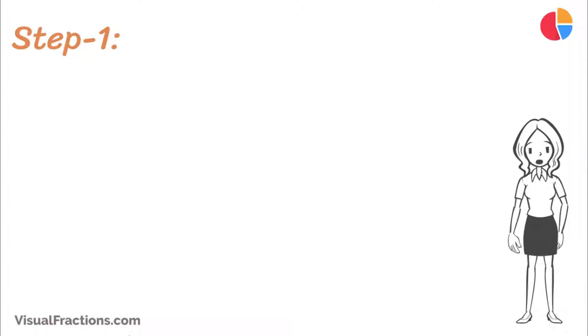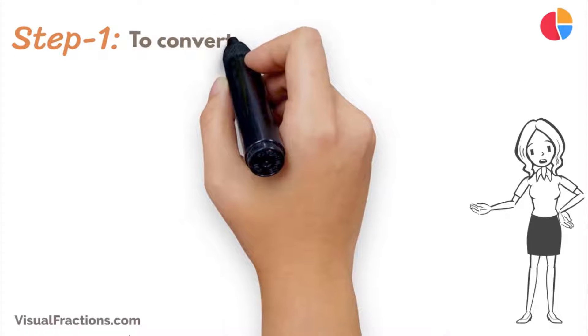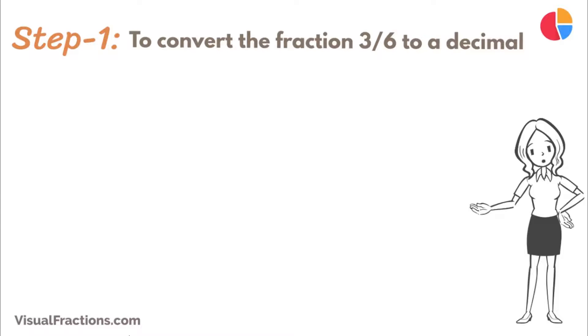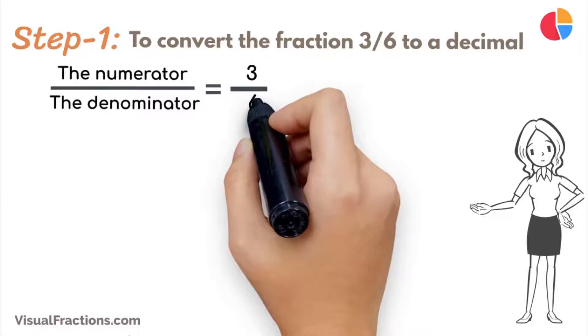The first step in converting the fraction 3 sixths to a percent is to convert this fraction to a decimal. We do this by dividing the numerator, the top number, which is 3, by the denominator, the bottom number, which is 6.